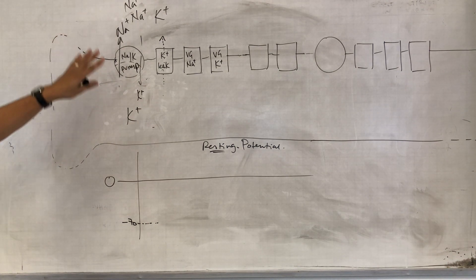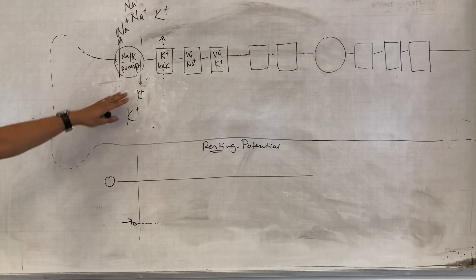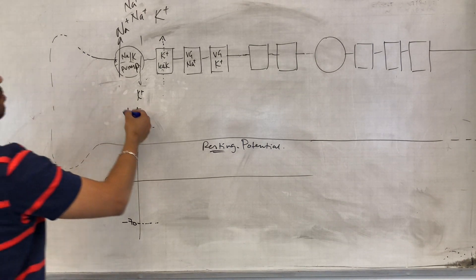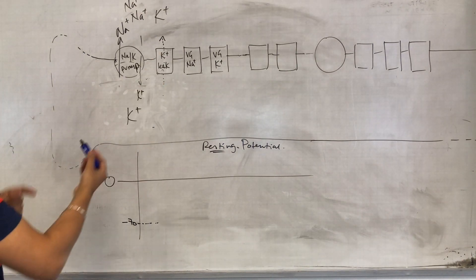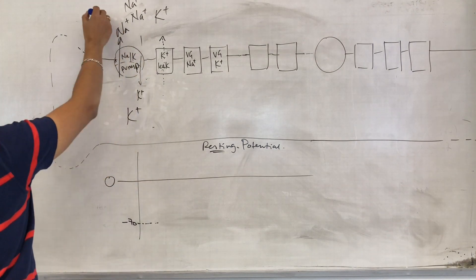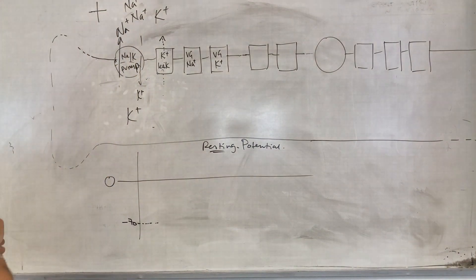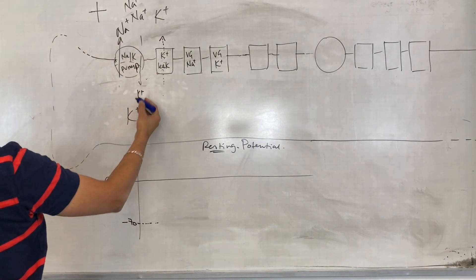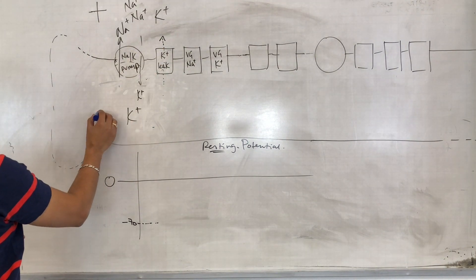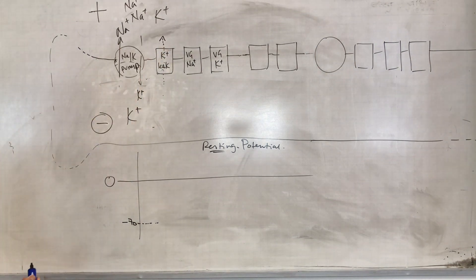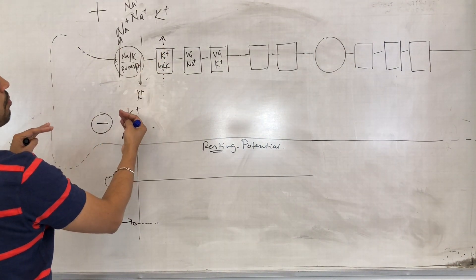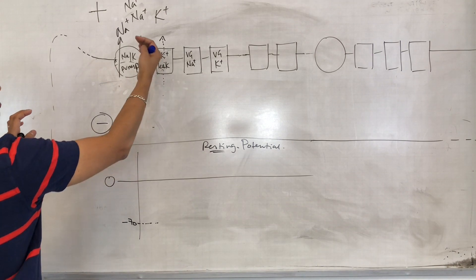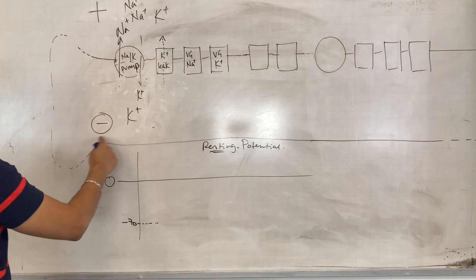Now why doesn't potassium keep going out? At some point the charge outside gets so positive that effectively the negative charge that's building up every time a potassium goes out builds up to the point where potassium is kind of attracted back in only because of that electrical gradient.